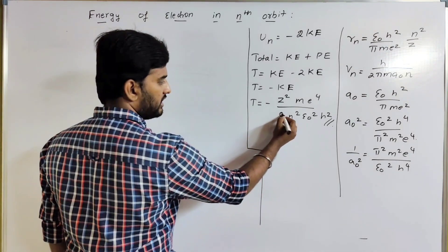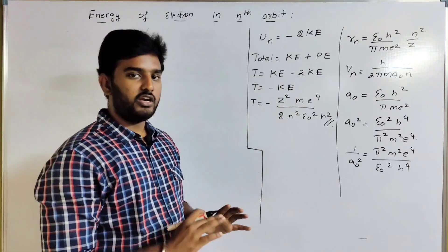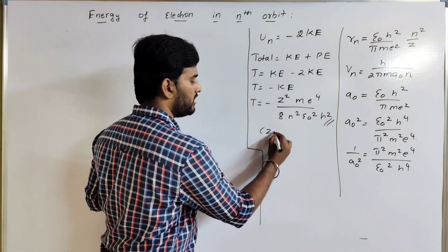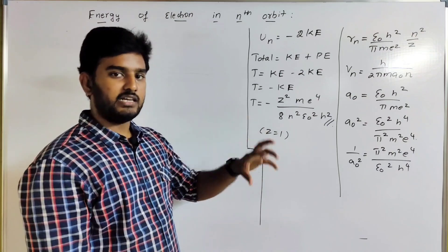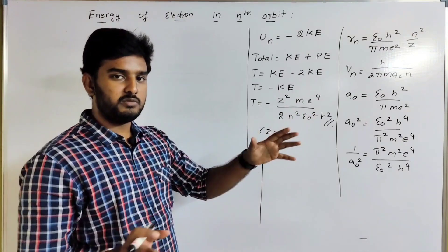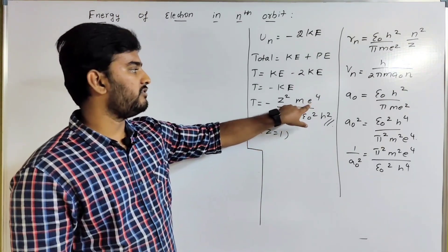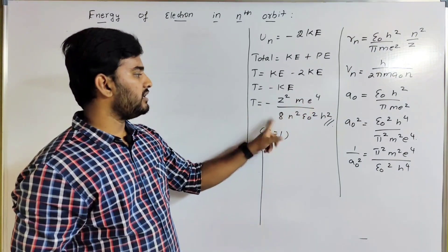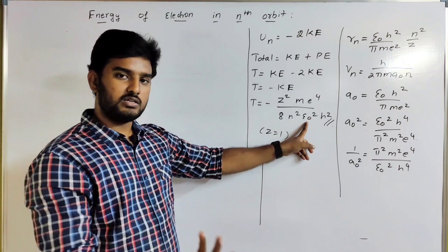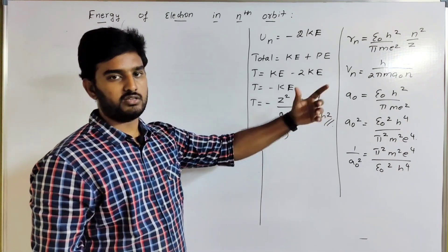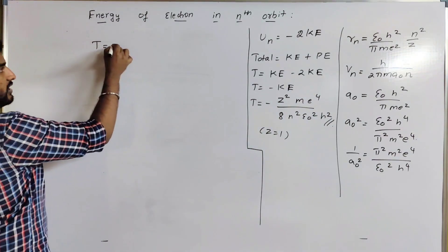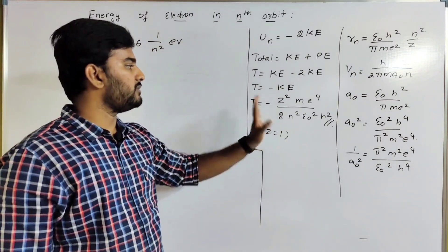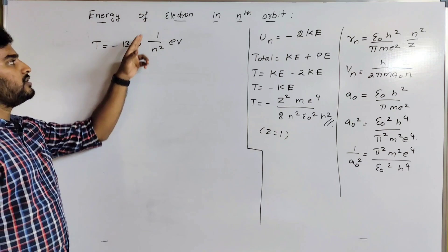Now we substitute all constant values. For example, for a hydrogen atom, the atomic number Z equals 1. Substituting mass of electron, charge of electron, Planck's constant h, and ε₀ (permittivity of free space) — all constants — we get the total energy En equals minus 13.6 times 1 over n squared electron volts.